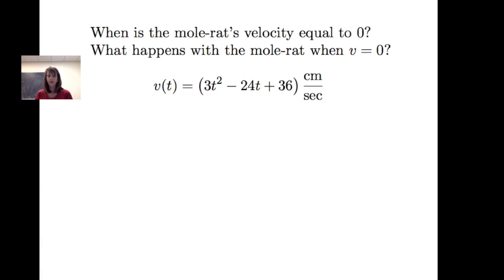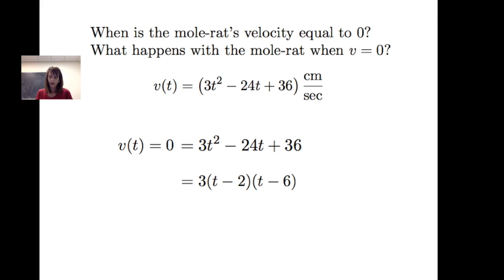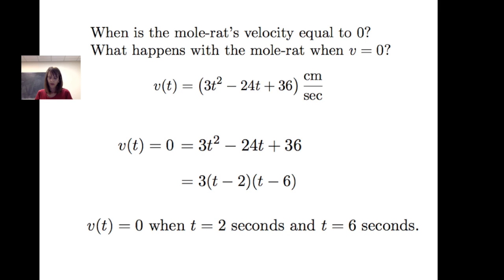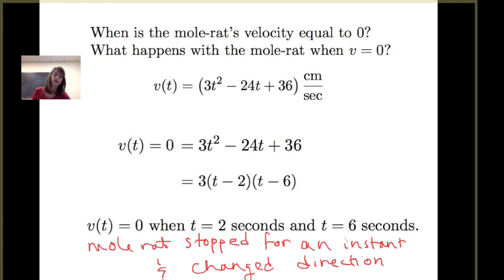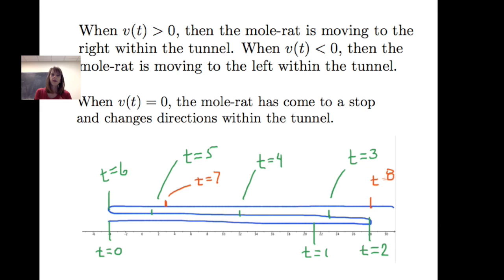The graph of v of t equals 3t squared minus 24t plus 36 crosses the time axis at t equals two and t equals six. Setting the velocity function equal to zero algebraically confirms that velocity is zero at t equals two and t equals six. At these moments the mole rat stopped for an instant and changed direction. In summary: velocity greater than zero means moving right; velocity less than zero means moving left; velocity equal to zero means the mole rat stopped and changed direction.